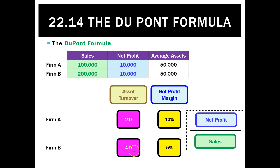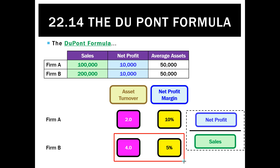This demonstrates a really good point. If I'm the Reject Shop, I have to generate a lot of sales because I don't make much profit on each one — I generate four dollars of sales for every asset I have but I'm only making a net profit of 5% on each sale. Myer, on the other hand, doesn't have to generate as many sales because it makes more net profit on each sale.